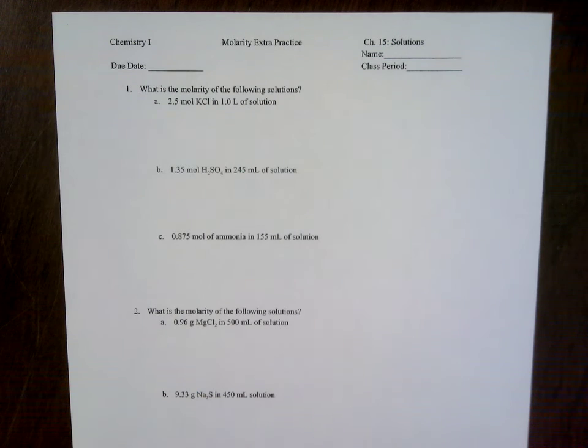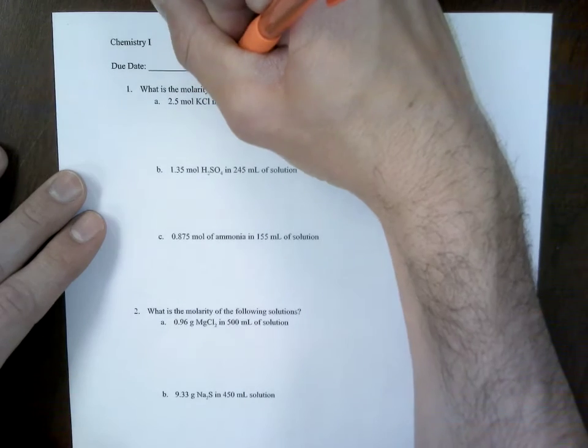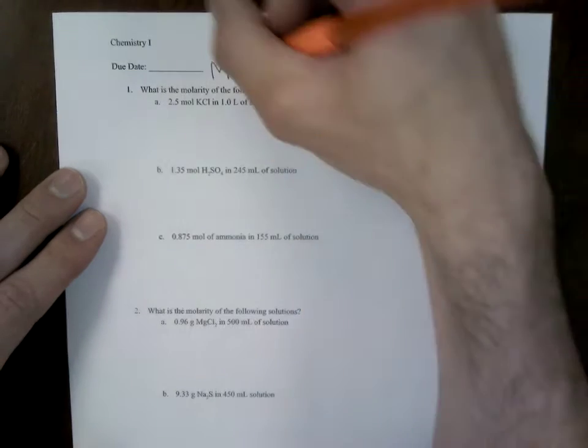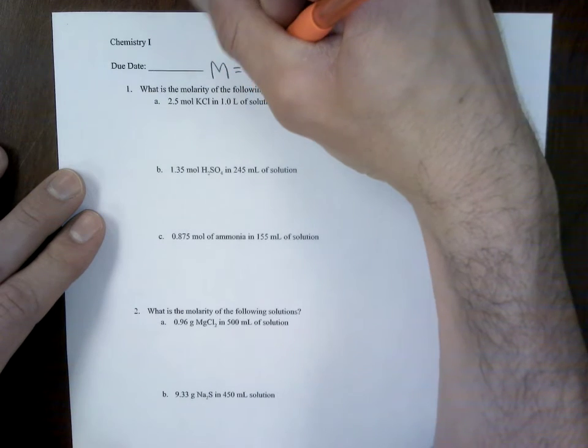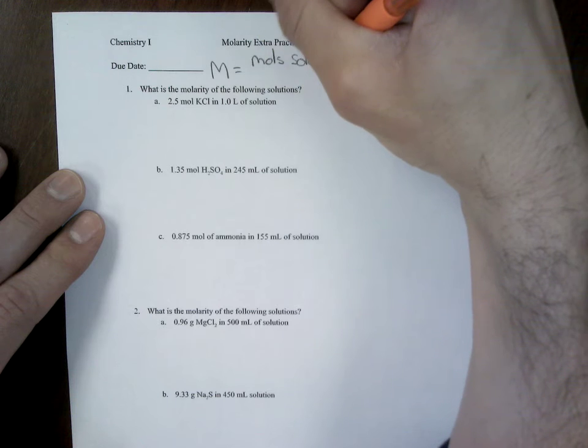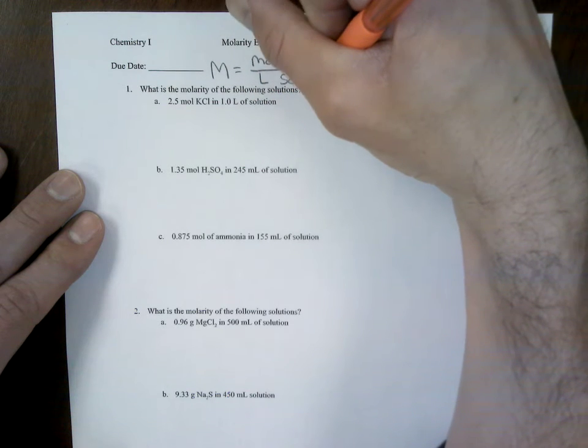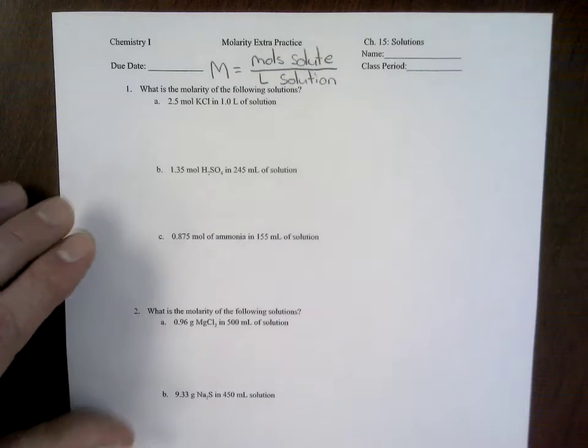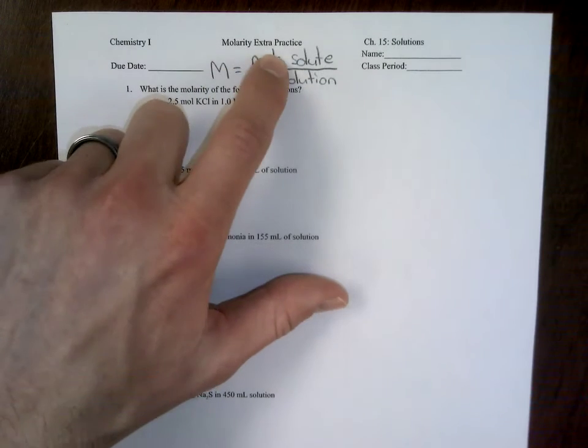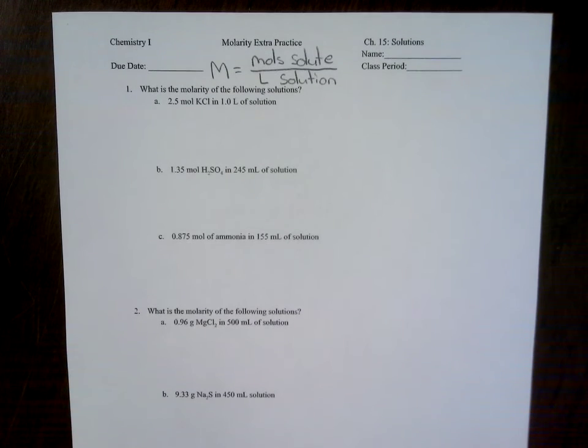With molarity, you hear the R, molarity. The formula is as follows: Big M for molarity is equal to moles of solute divided by liters of solution. Again, molarity, big M, moles of solute divided by liters of solution. This is key to solving these types of problems.